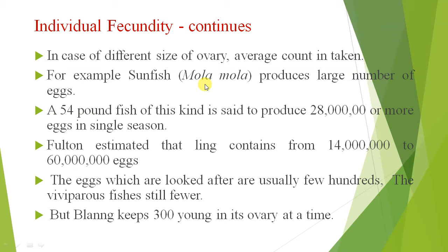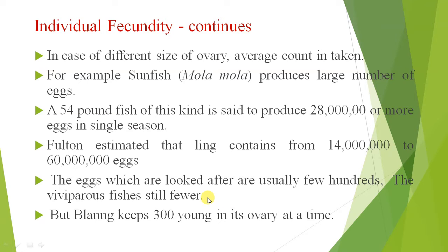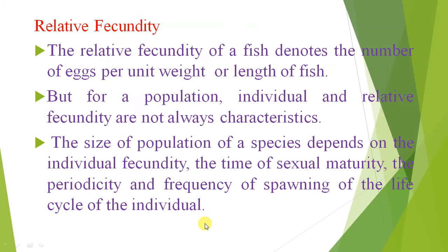If we talk about the sunfish, Mola mola, it produces a large number of eggs. A 54-pound fish of this kind is said to produce a large amount of eggs in a single season. The eggs which are looked after are usually a few hundred; the viviparous fishes are still fewer. The shark keeps 300 young in its ovary at a time.